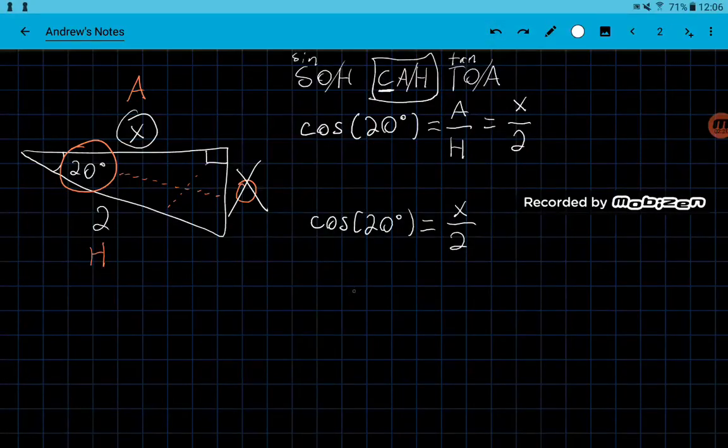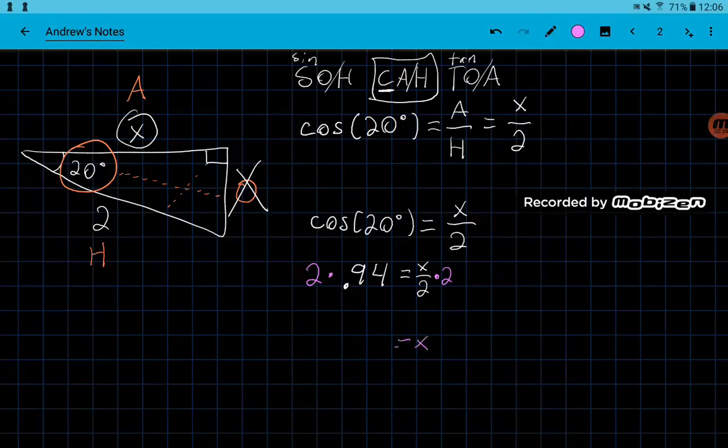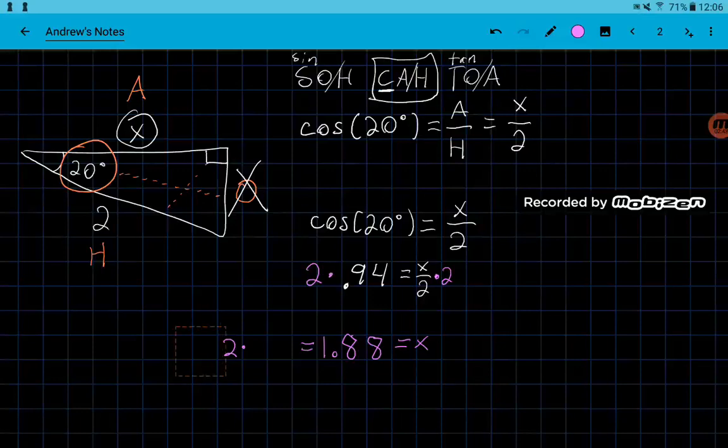So cosine of 20 degrees is about 0.94, and that's equal to x over 2. And then to solve for x, we just need to multiply both sides by 2, and then we should be left with x equals 2 times 0.94, which is approximately 1.88, because we did 2 times 0.94. Well, I already wrote that up above, so this becomes 1.88, and this is our final answer.